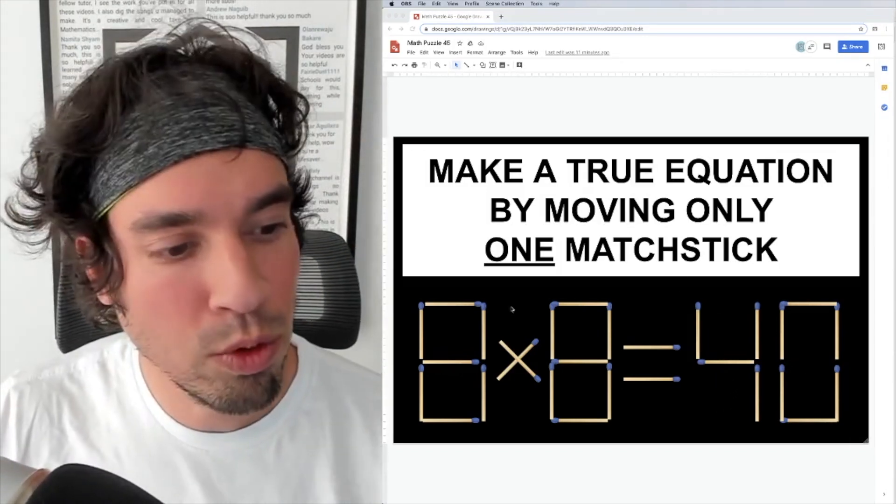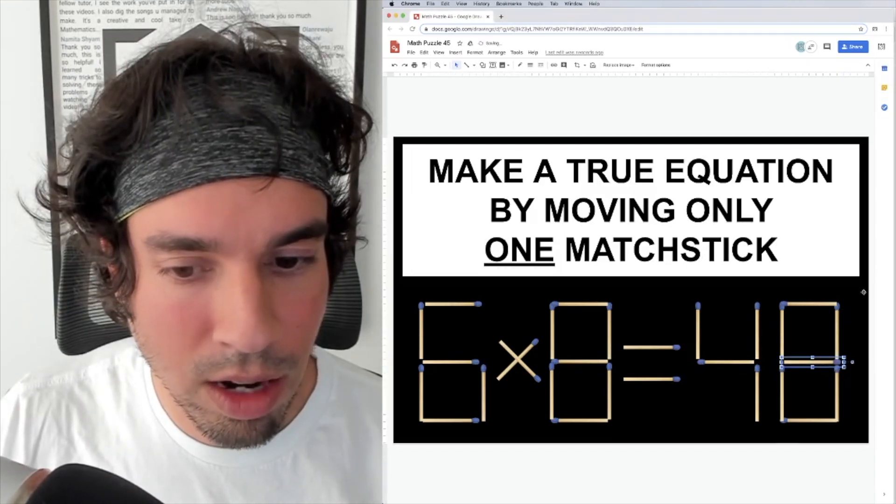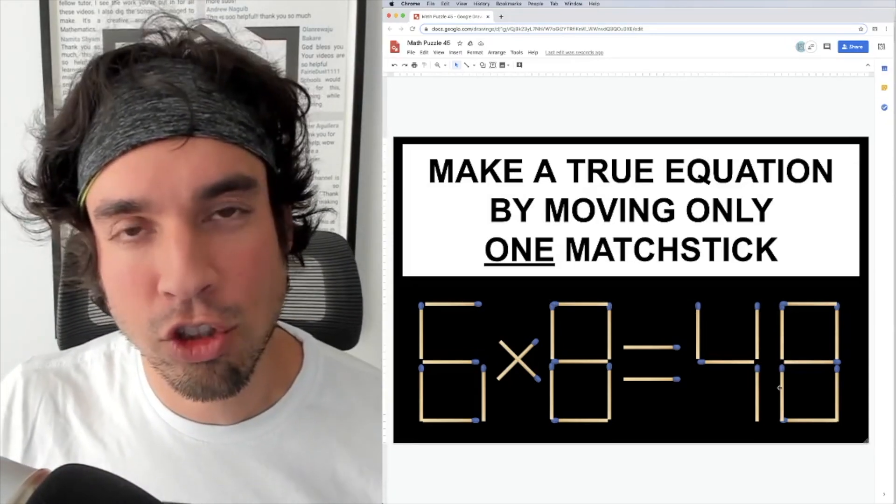So the move to make is as follow. I'm going to take this guy right here and bring it right there. Now our equation says six times eight equals 48, which of course is true.